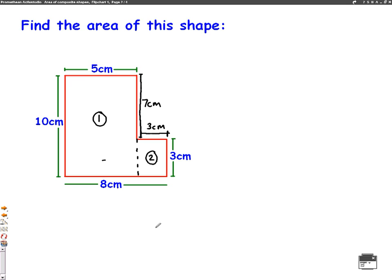So we've found the missing sides. Now all we need to do is work out the two area pieces. So number 1, it's a rectangle so it's base times height. In this case it's 5 across and it's 10 down. So it's 5 times 10 which is 50 centimetres squared.